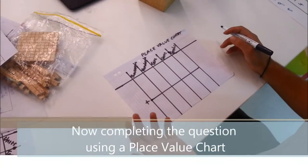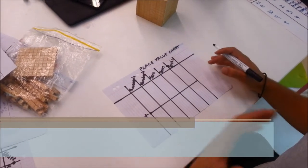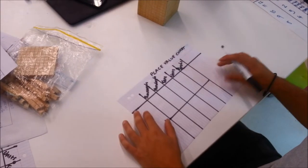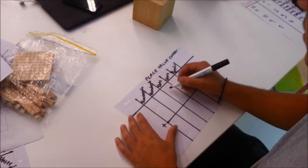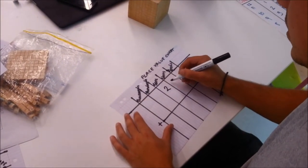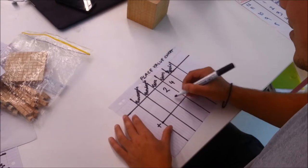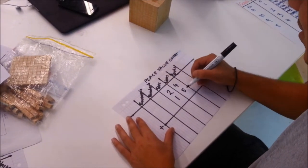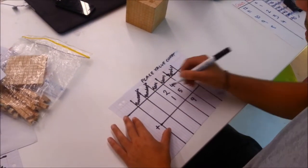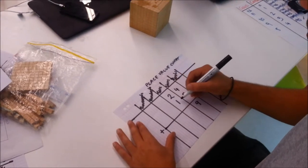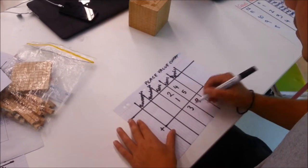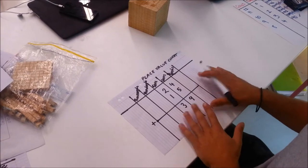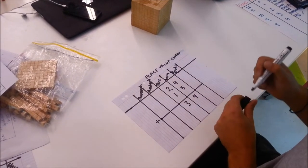The way that students can do addition like this is with a place value chart using symbols. So we've got 24 and 15. You've got 4 units and 5 units, which makes 9 units. And then 2 tens and 1 ten, which makes 3 tens. As you can see, we've got the same answer — 39 — with both the place value chart and with the MAB blocks.